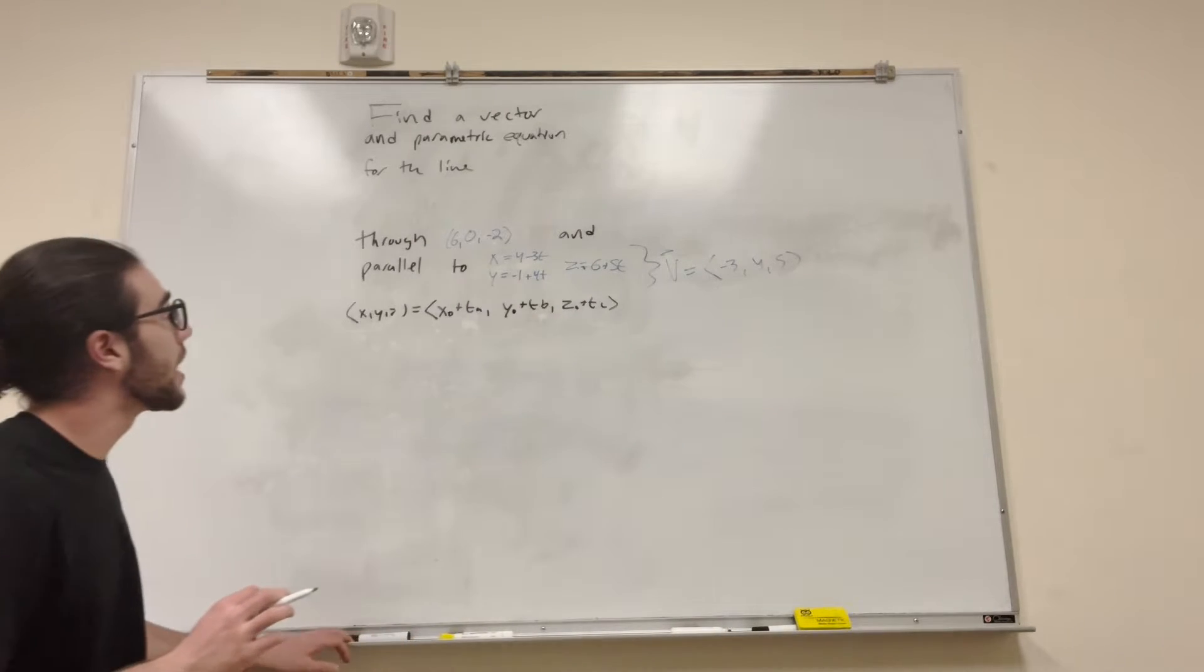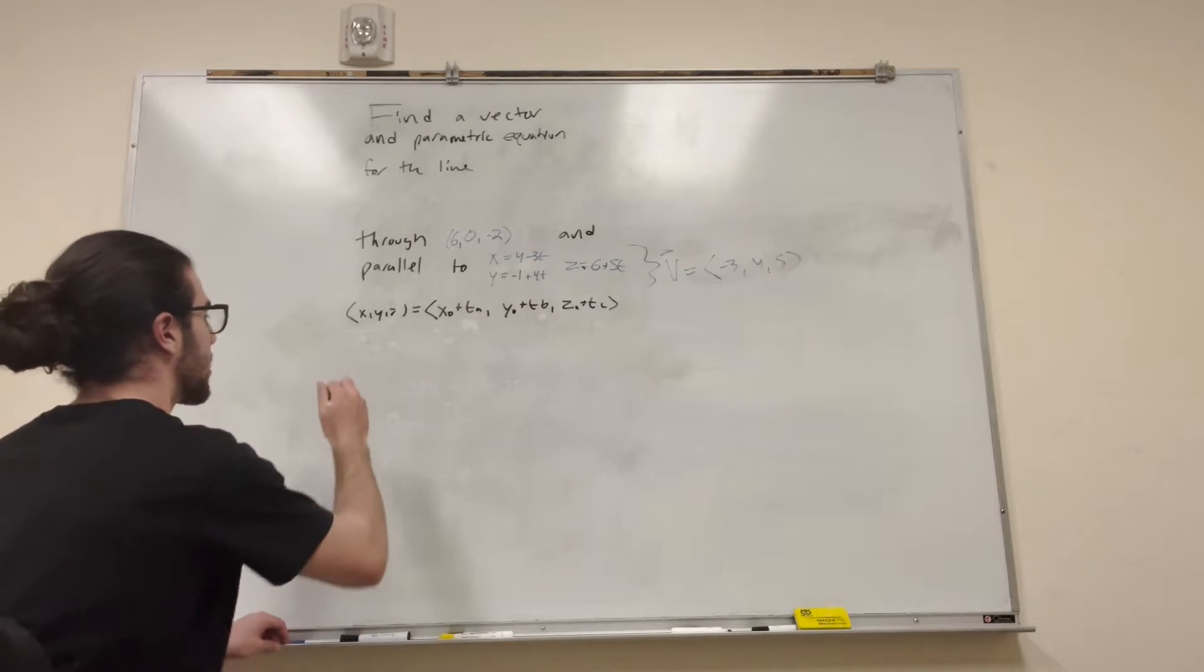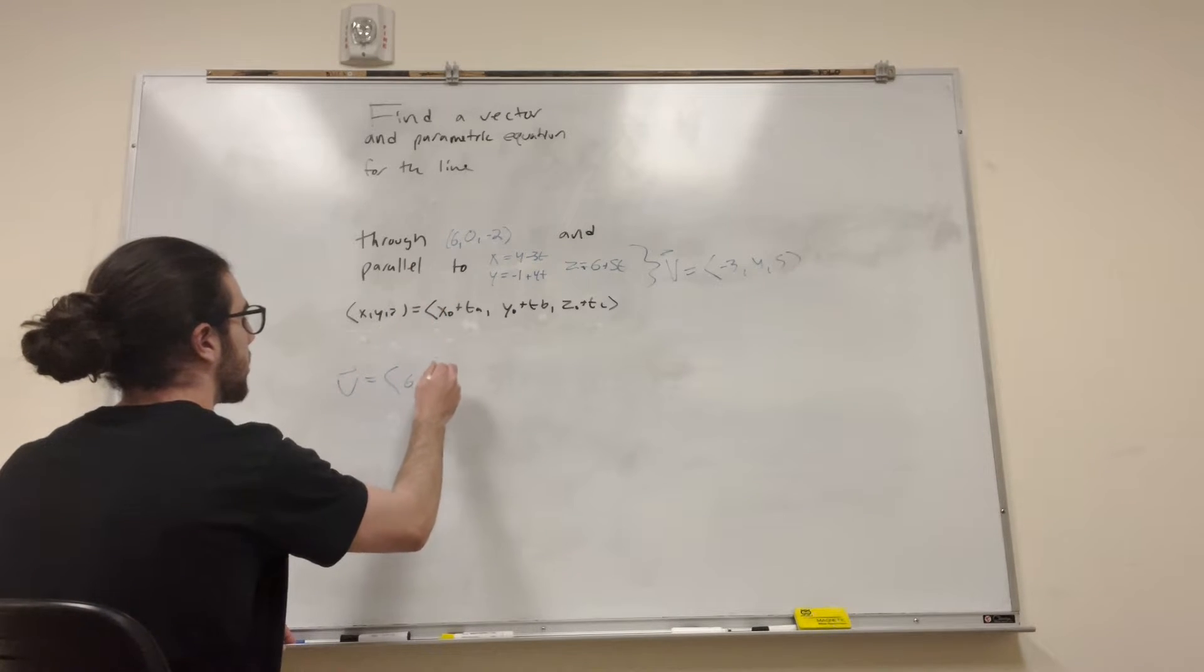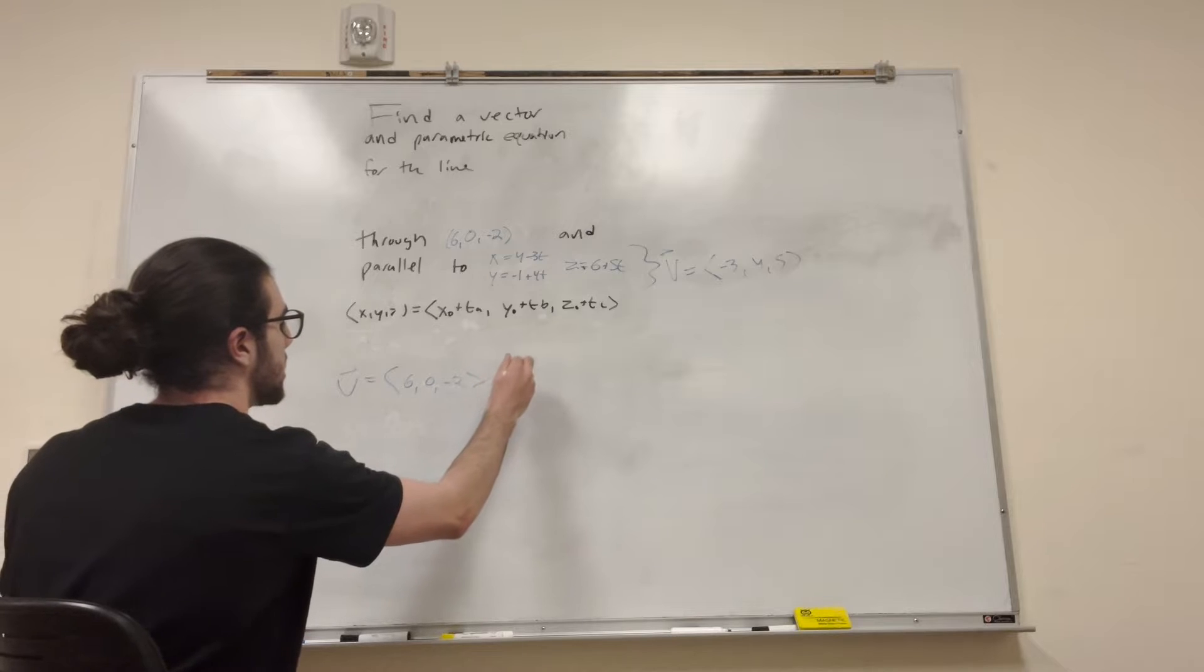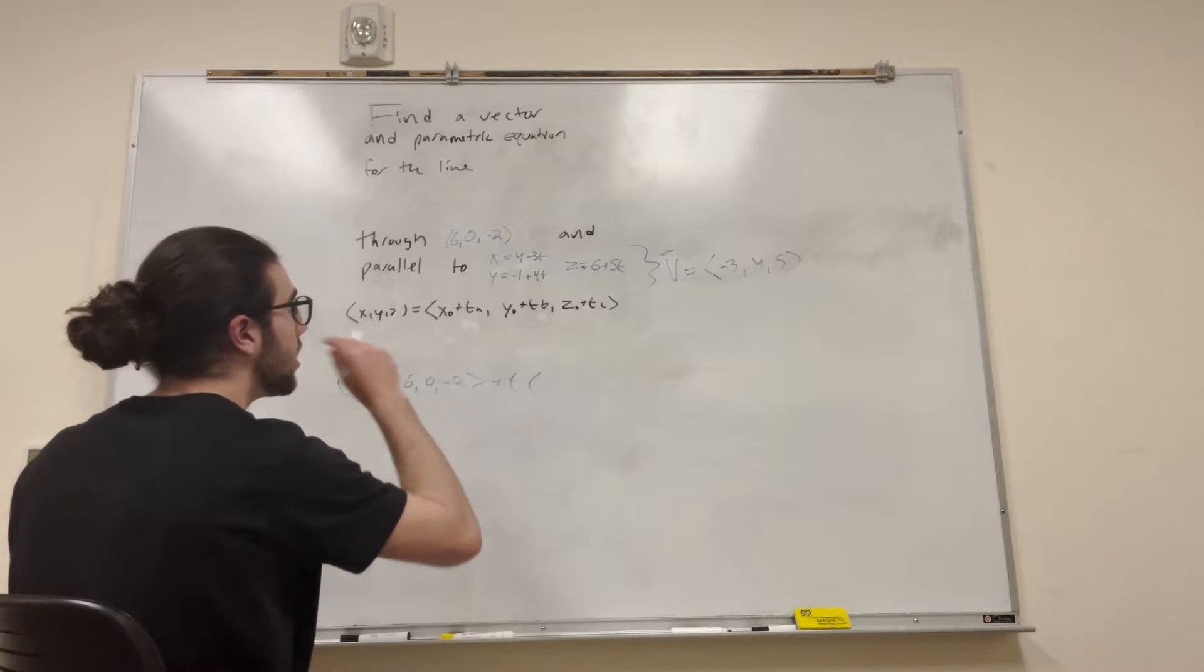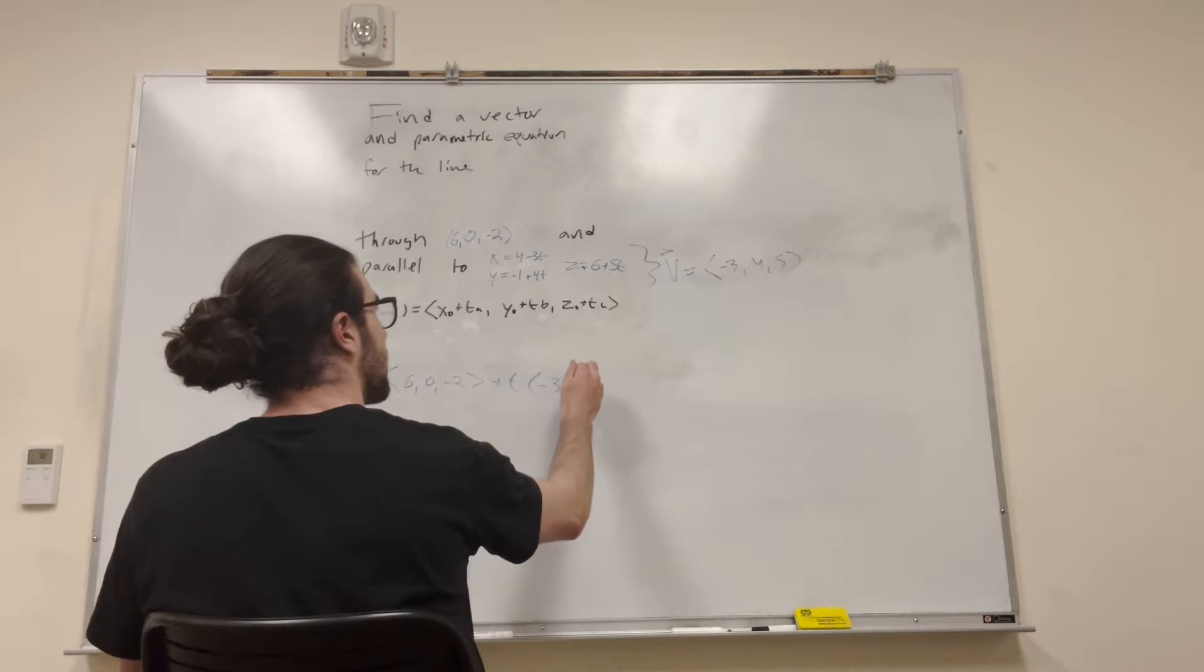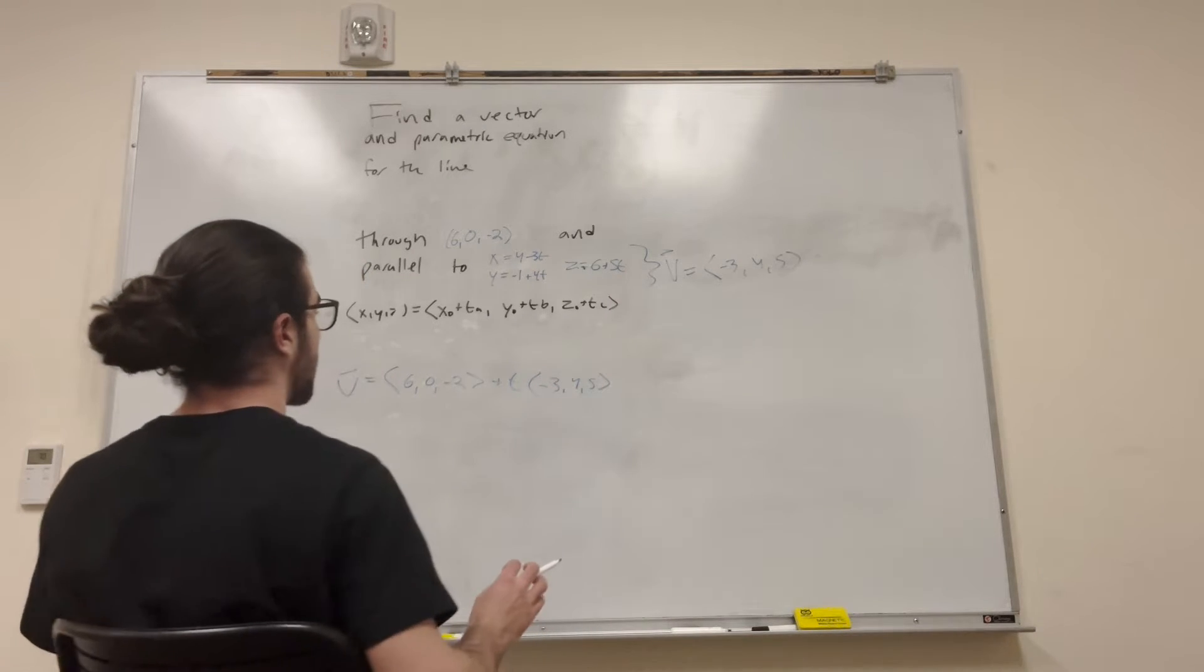Therefore, we can go ahead and write a vector equation right here. So the vector equals our starting point (6, 0, -2) plus t times our vector, which is what we just took: (-3, 4, 5). That is the vector equation right there.